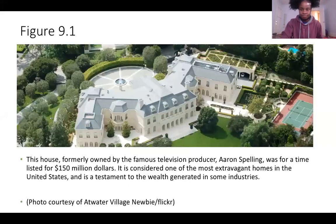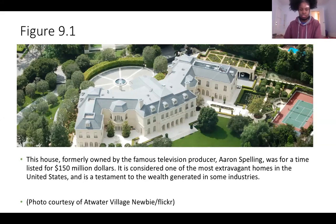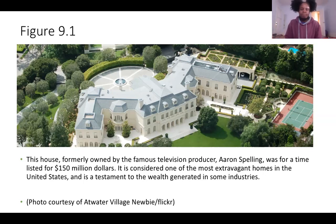This house, formerly owned by famous television producer Aaron Spelling, was listed for $150 million. It is considered one of the most extravagant homes in the United States and is a testament to wealth generated in the entertainment industry. What does this home tell you about the United States? A lot of us are living in very different conditions.